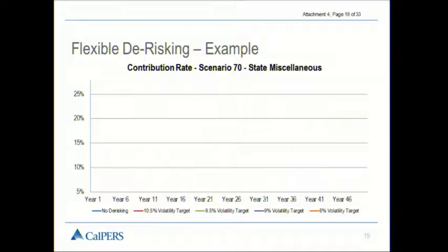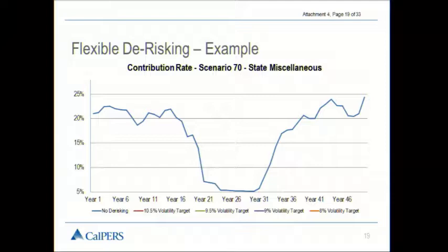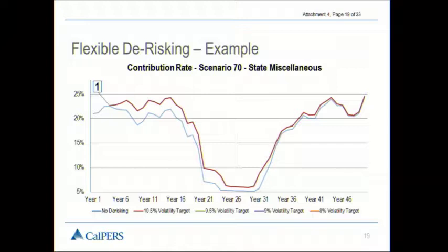This is what the employer contribution rate would have been over the period if we had not done any de-risking — starting in the 20% range, dropping in years 21 through about 30 to quite a low level (presumably the normal cost), and increasing again as we get some relatively poor investment returns beyond that. With the first de-risking event occurring, what we're seeing is that the contribution rate does not decrease as much as it would have if we had not de-risked. Right near the end of this graph, the de-risking has resulted in a contribution rate equal to what it would have been without de-risking — because some of those losses in late years were avoided by having lower investment volatility.